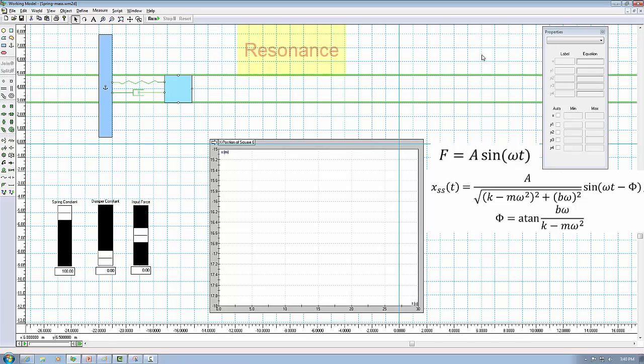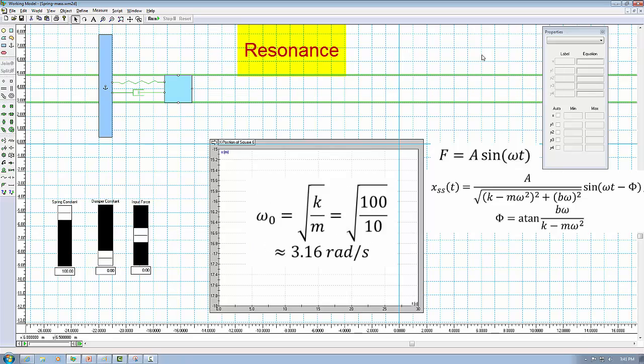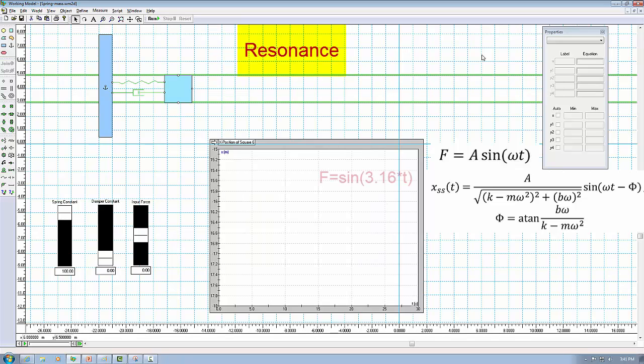In the end, let's try out the resonance case. Let's make the damping ratio to be 0 and give the system a small disturbance force. Recall the natural frequency is about 3.16 rad per second. So we'll set the force to be F equals sine 3.16 times T.